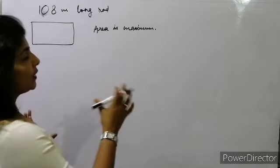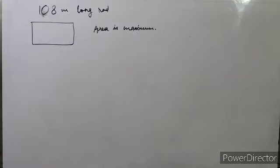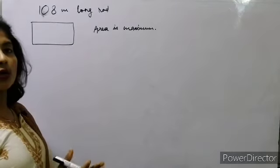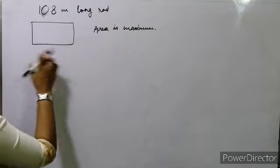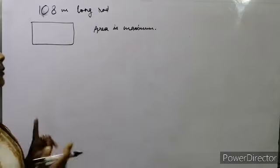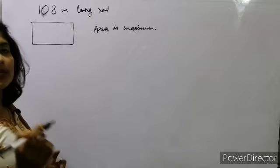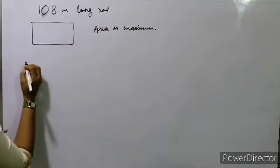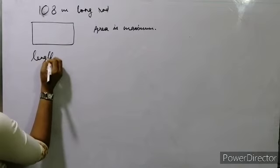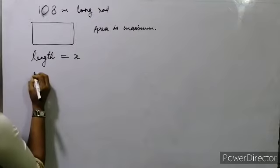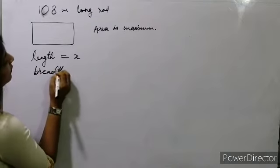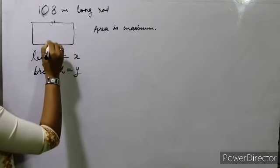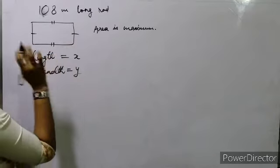We have another question: a rod of 108 meters long is bent to form a rectangle. We have to find the dimensions — length and breadth — such that the area is maximum. Let length = x and breadth = y.